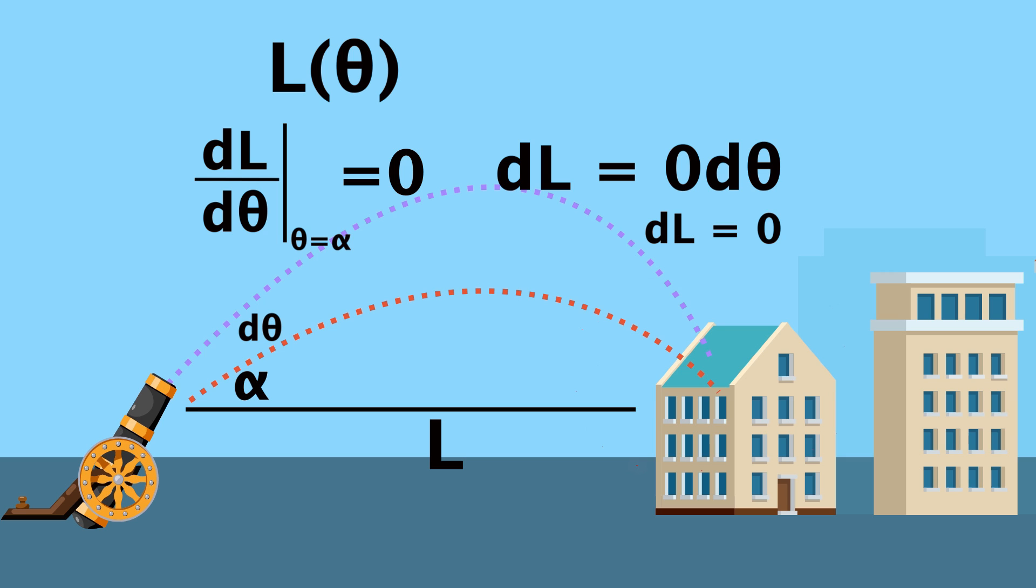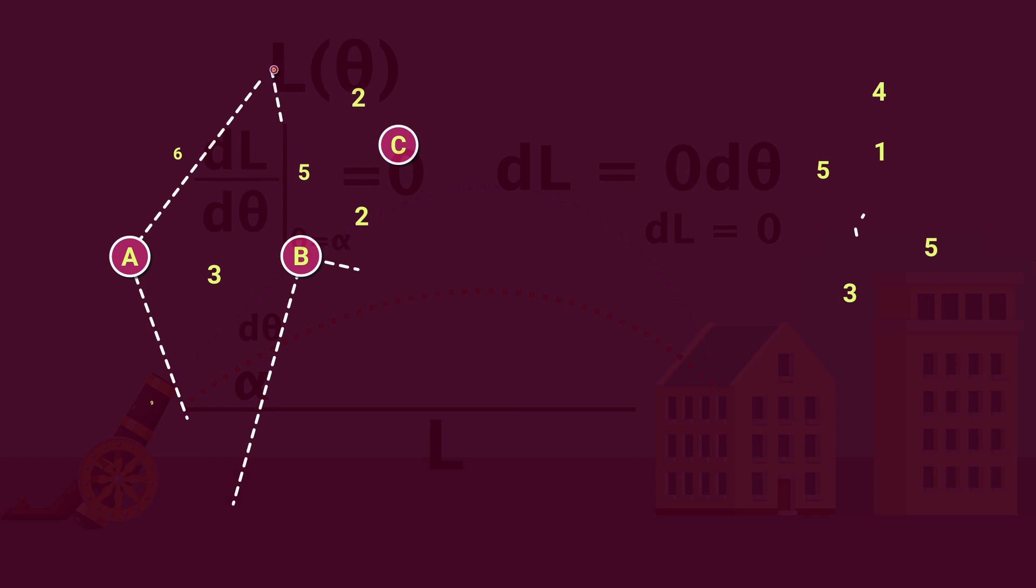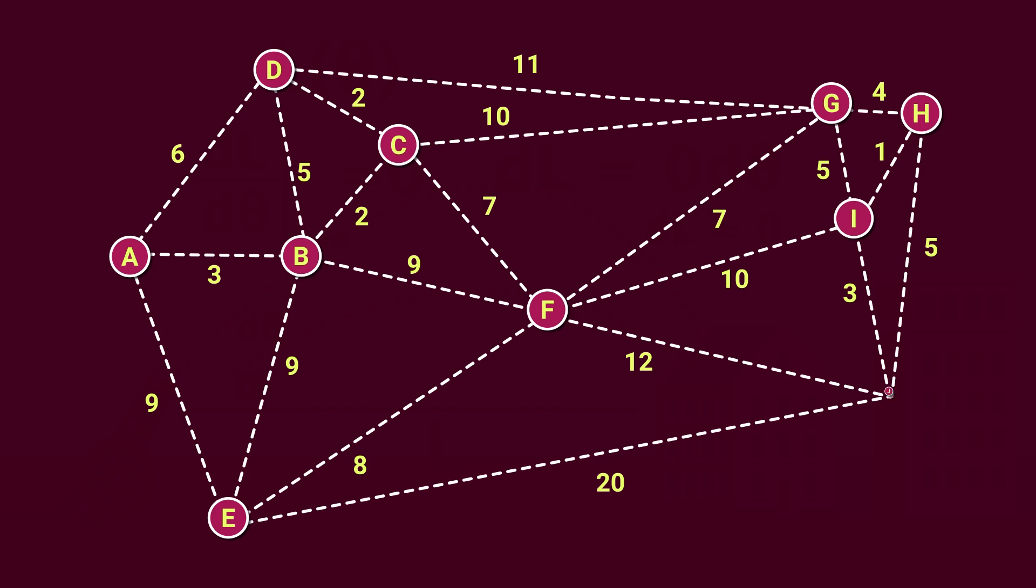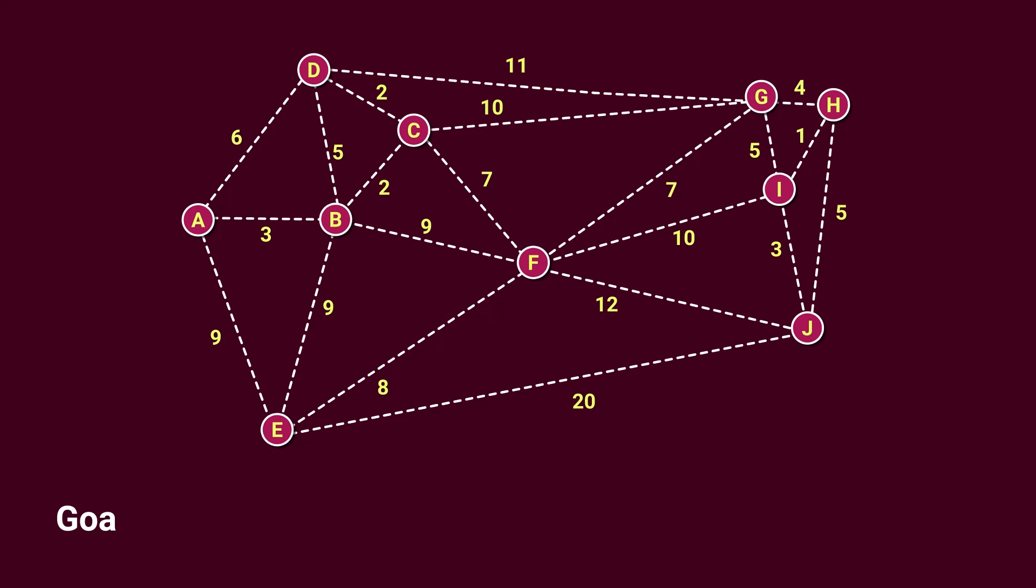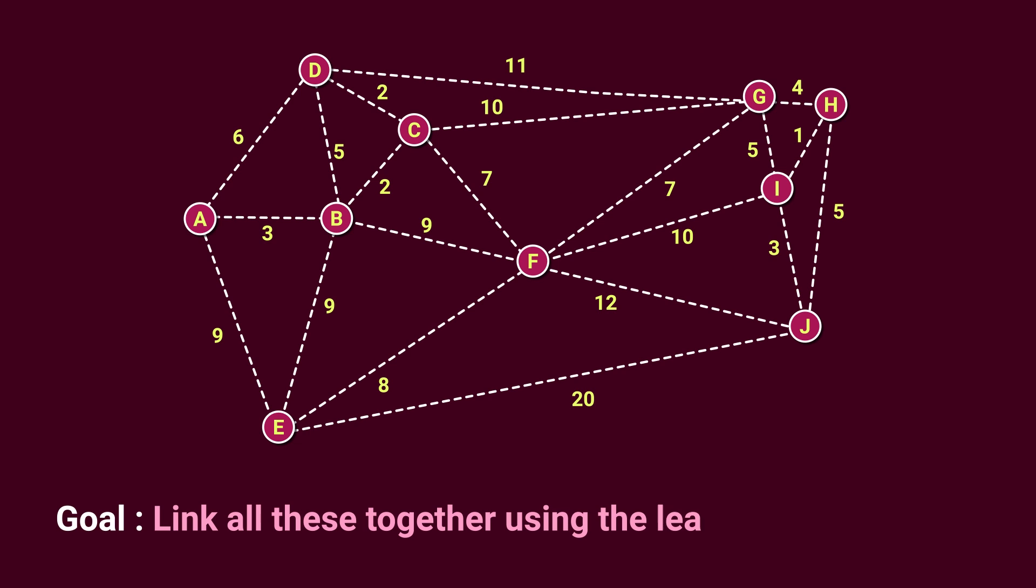Now here's an entirely different category of optimization problems that's probably the easiest to find applications for. Let's go back to our airport example, but this time assume there are several of them that are separated by these distances. I know this doesn't show the distance between every hypothetical airport, but let's assume only these connections are even possible. Anyways, the goal is to link all these together using the least amount of wire. So, I mean, we could connect everything together like this,